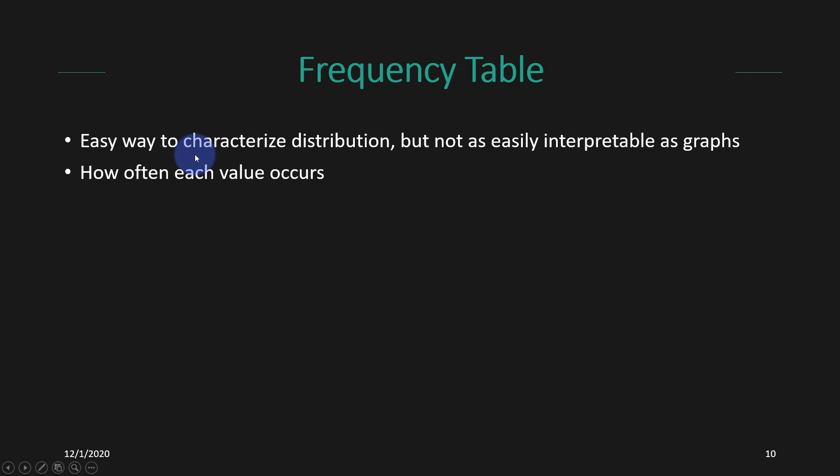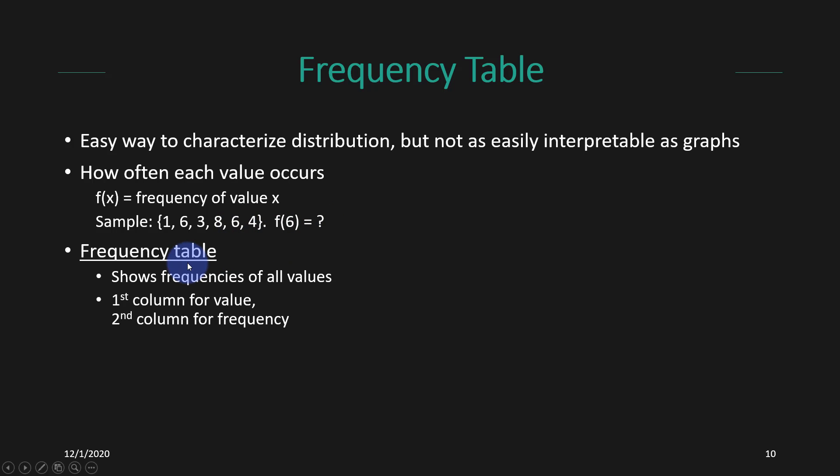As a starting point, let's think about a frequency table as kind of the most bare bones type of data visualization we might have. A frequency table simply tells us the frequency of a specific value. If this was our sample, and we wanted to know what's the frequency of six, we could look through the data and count that there are two sixes. F of six is going to be two. We could build this up across a bunch more data and with a bunch more different values.